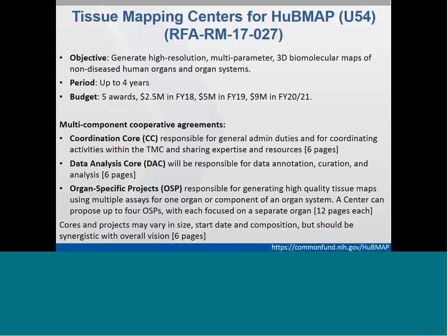We expect centers to start by optimizing the pipeline by focusing on one organ or component, while actively planning for expanding to multiple organs or systems. We plan to fund at least one center focused in each of the following areas: discrete complex organs, distributed organ systems, and rare, dynamic, or motile tissue types and their microenvironment or tissue neighborhoods. Tissue centers should plan a prospective tissue collection strategy with enrollment criteria that will minimize the risk of abnormal or degraded tissue, as this initiative is specifically focused on normal tissue.